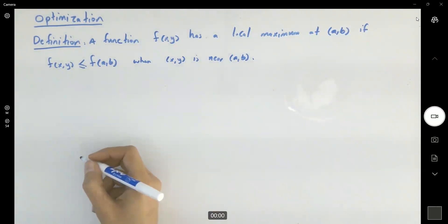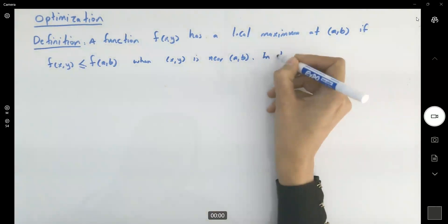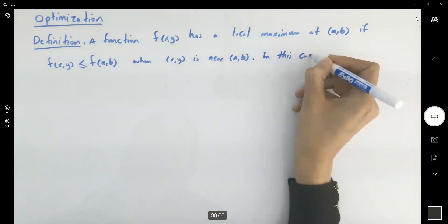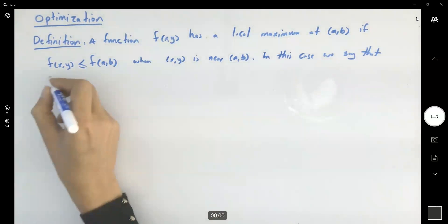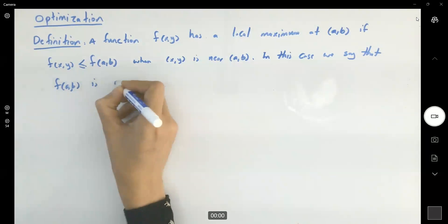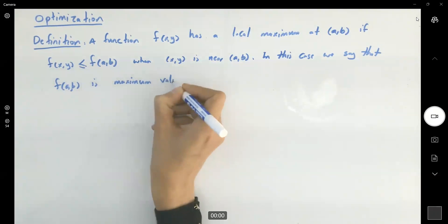In that case we say that f of a and b is the local maximum or the maximum value of the function. f of a and b, in this case, we say that f of a and b is the maximum value.